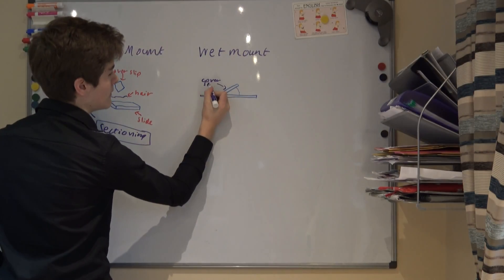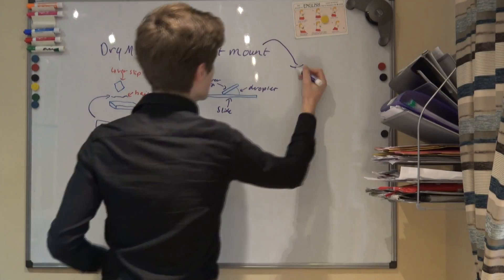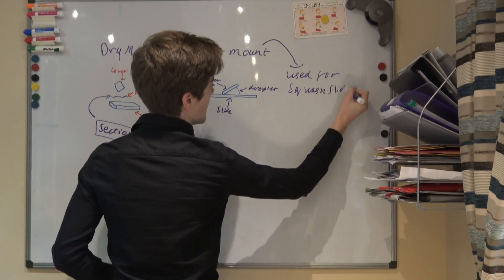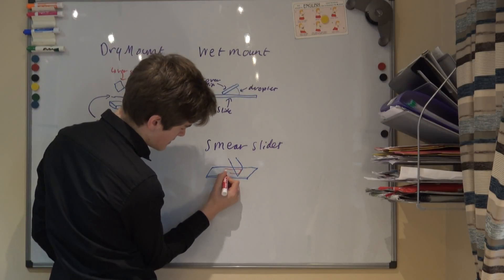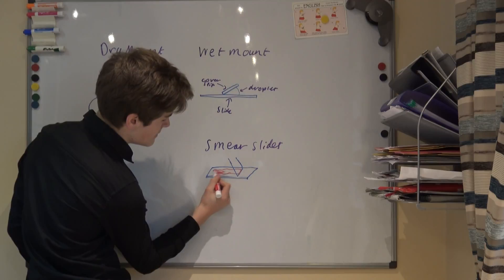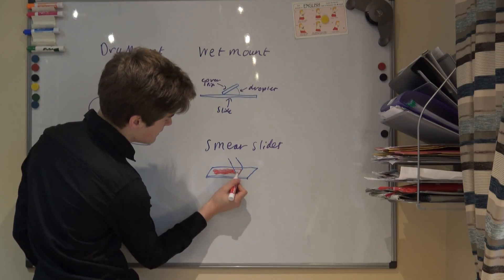Or as a squash slide, where a wet mount is prepared, and a lens tissue is used to press down the cover slip. Or finally, as a smear slide, where the edge of a slide is used to smear the sample, creating a thin, even coating on another slide.